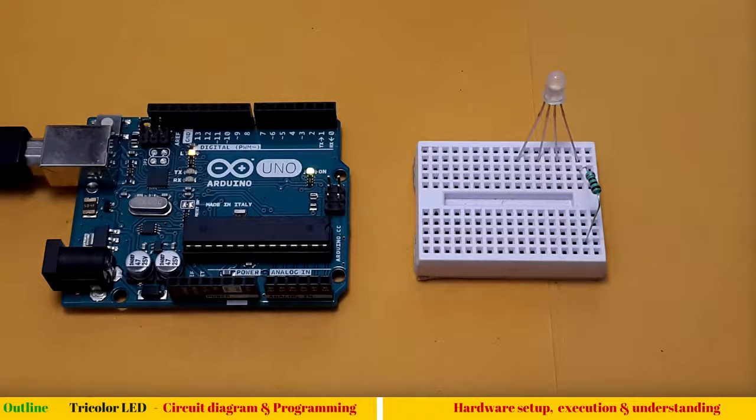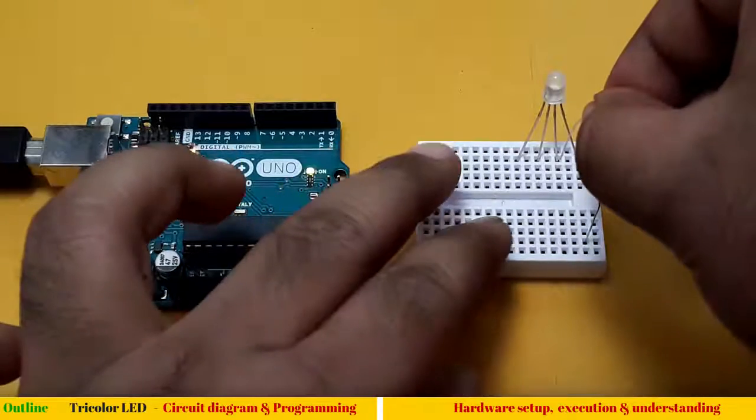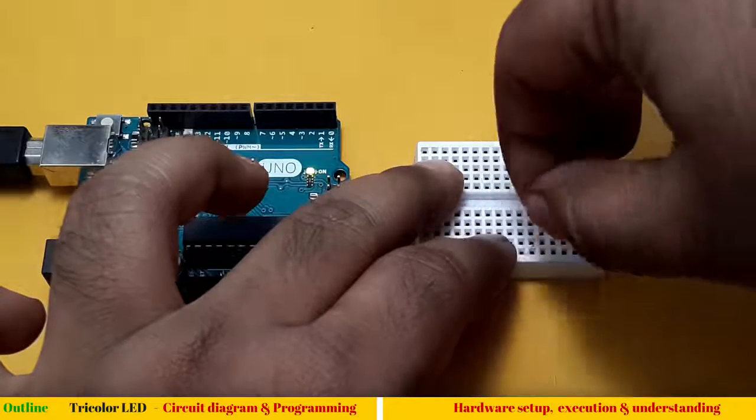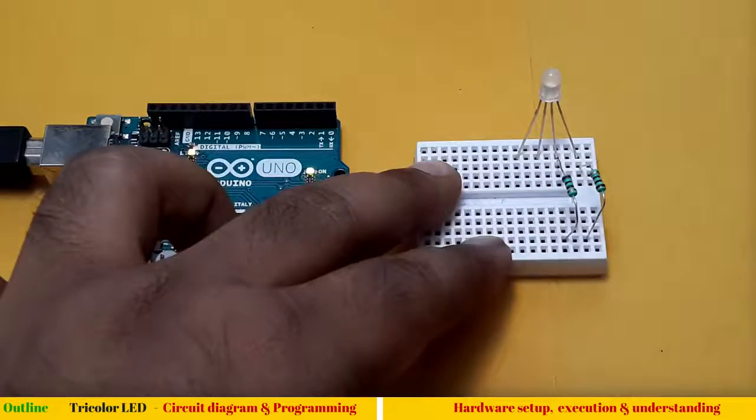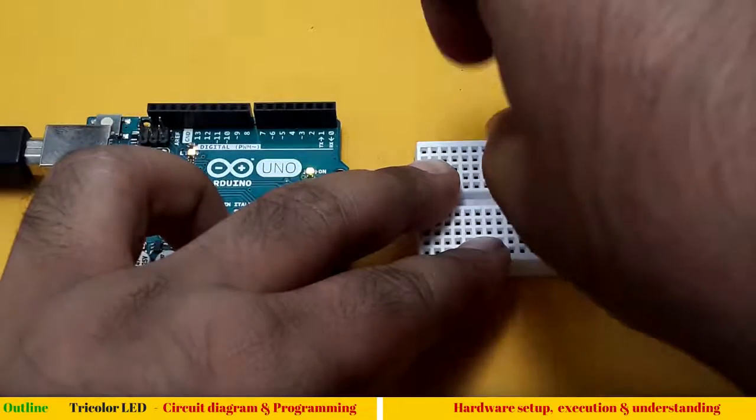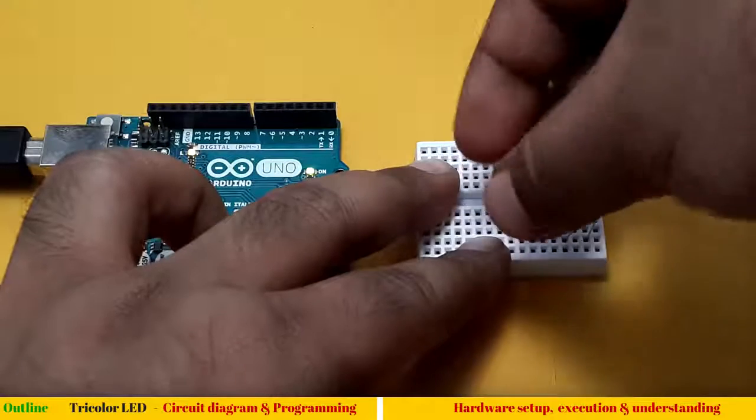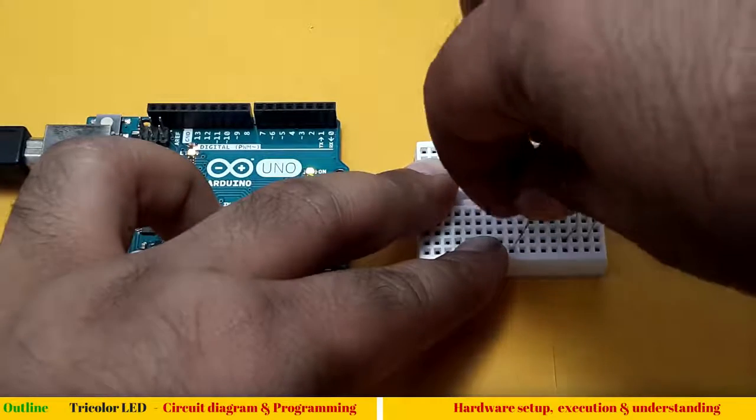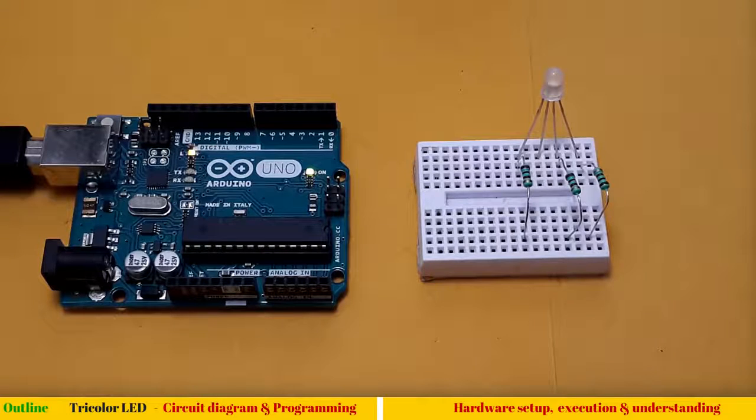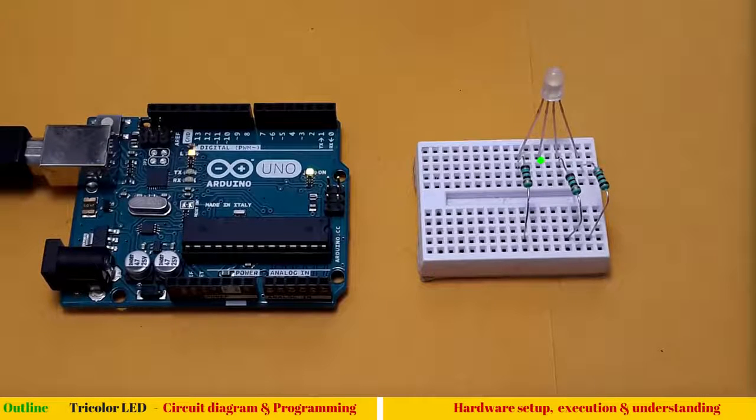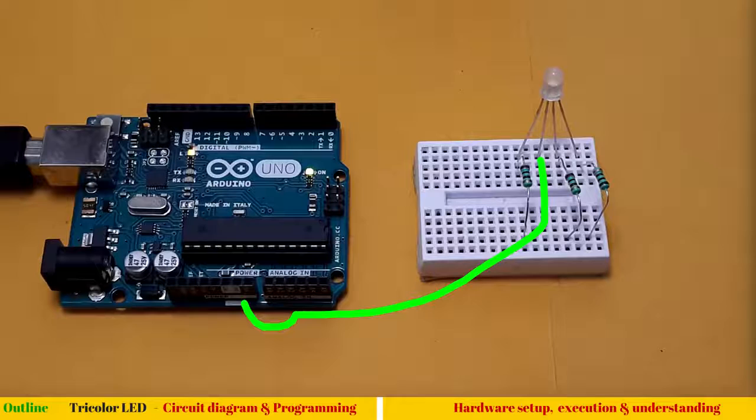Let me connect the 100 ohm resistors one by one. I have connected all my resistors and this pin which is our common cathode is kept blank here and we will connect it to ground.